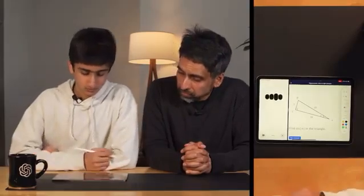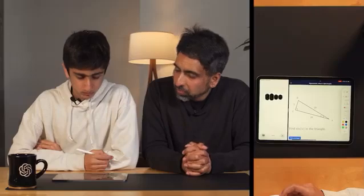Of course, I'd be happy to help. Let's look at the problem together. Can you first identify which sides of the triangle are the opposite, adjacent, and hypotenuse relative to angle alpha?